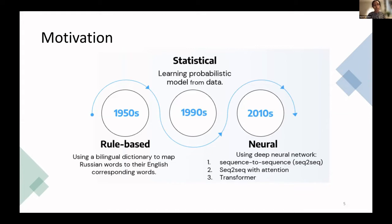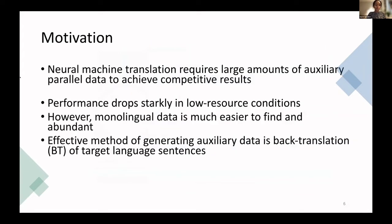With this, an issue arose because most low resource languages do not have enough digital data available to train those neural machine translation models. So to solve this, we started our research on how to improve neural machine translation in the case of a low resource language like Tigrinya. Neural machine translation models require large amounts of parallel sentences from source to target language, and their performance drops in low resource conditions, but monolingual data is easier to find than parallel sentences.